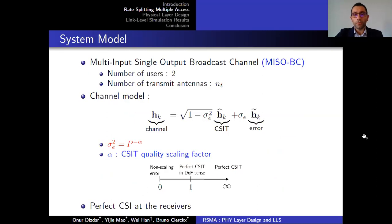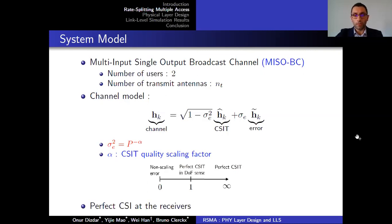We consider a MISO broadcast channel with two users and an arbitrary number of transmit antennas. The channel consists of CSIT and channel estimation error components. The variance of the channel estimation error is proportional to the total transmit power P, scaled by a CSIT scaling factor. We assume perfect CSI at the receivers.